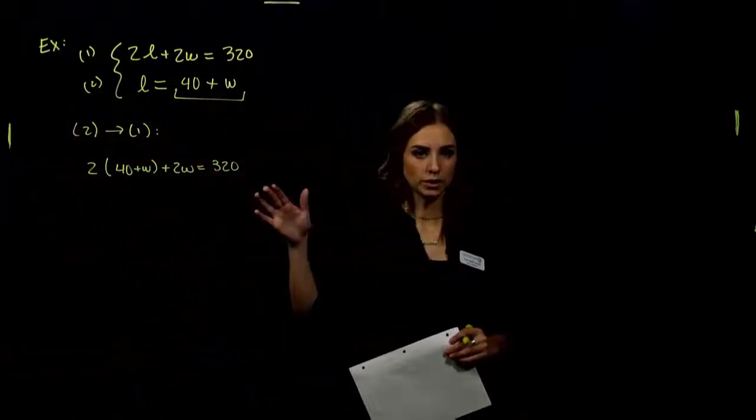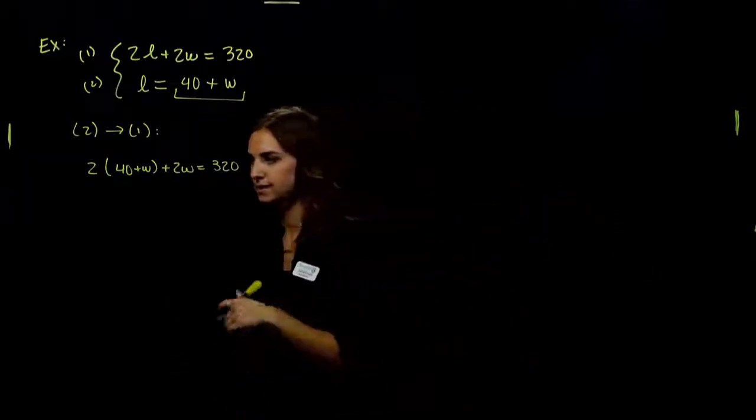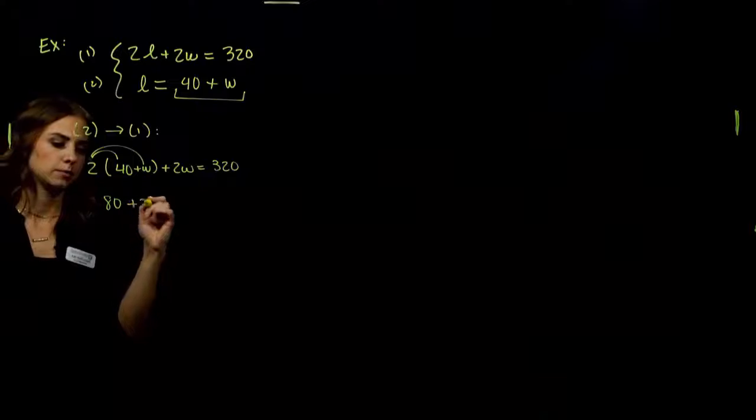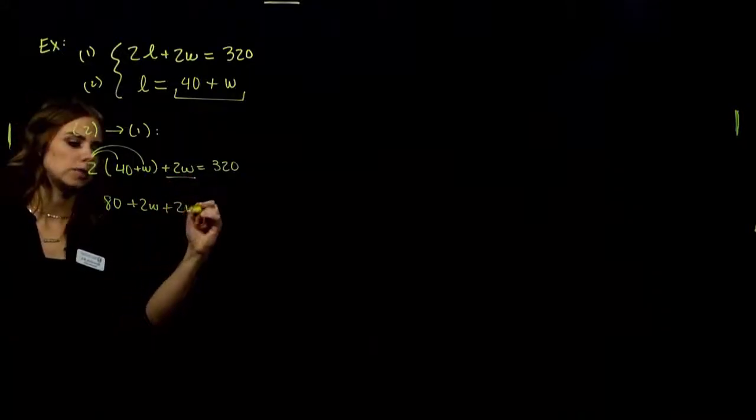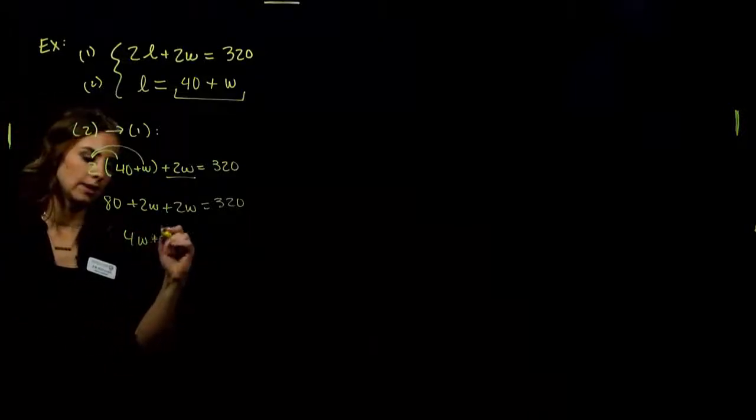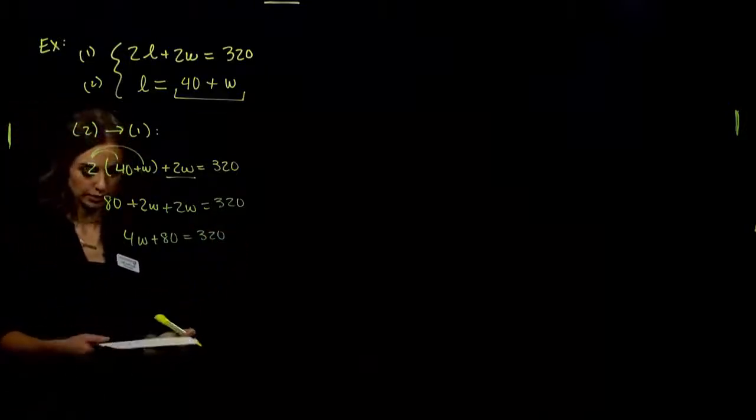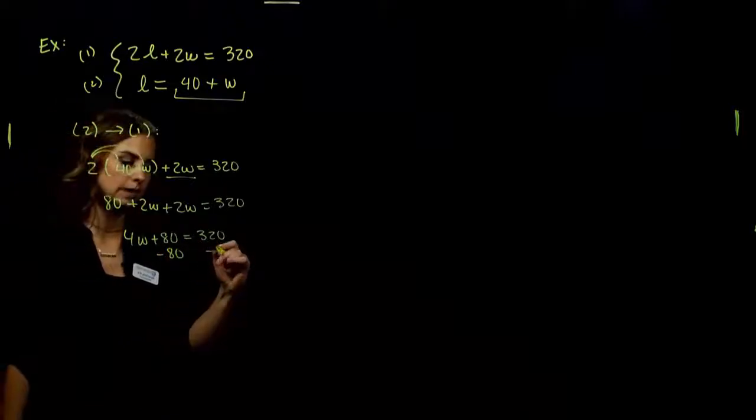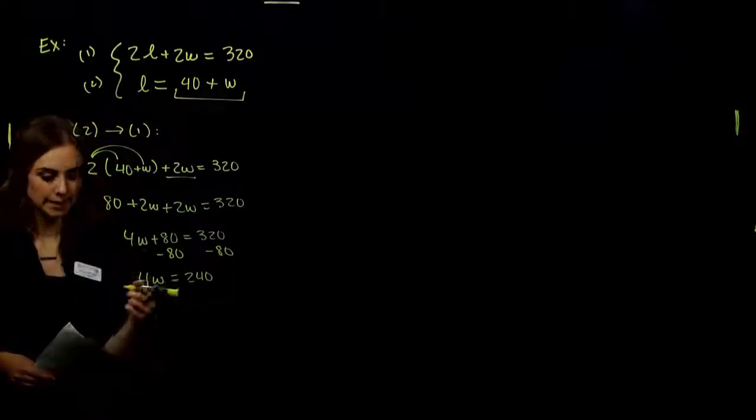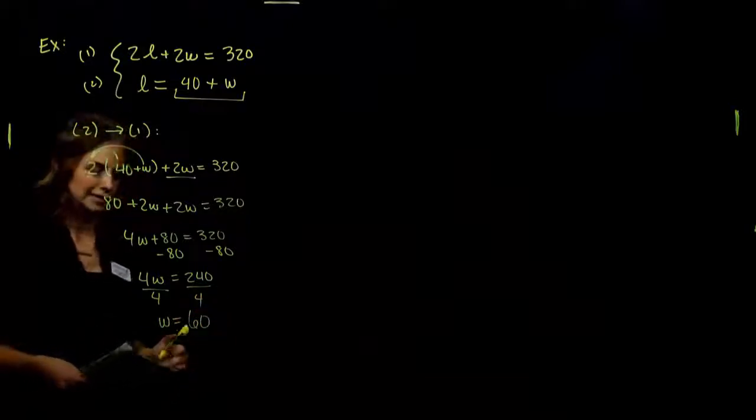Now we have an equation all in one variable that we can solve. So what should we do next? We have to distribute to get rid of the parentheses. So what do we get now? 2 times 40 is 80. 2 times W is 2W. We can't forget about that second 2W. So combining our like terms, we've got 4W's and 80, giving us 320. Trying to get W on its own, what's got to go? We'll subtract 80 from both sides. So 4W is equal to 240. Getting W alone, we'll divide both sides by 4. So W is 60.